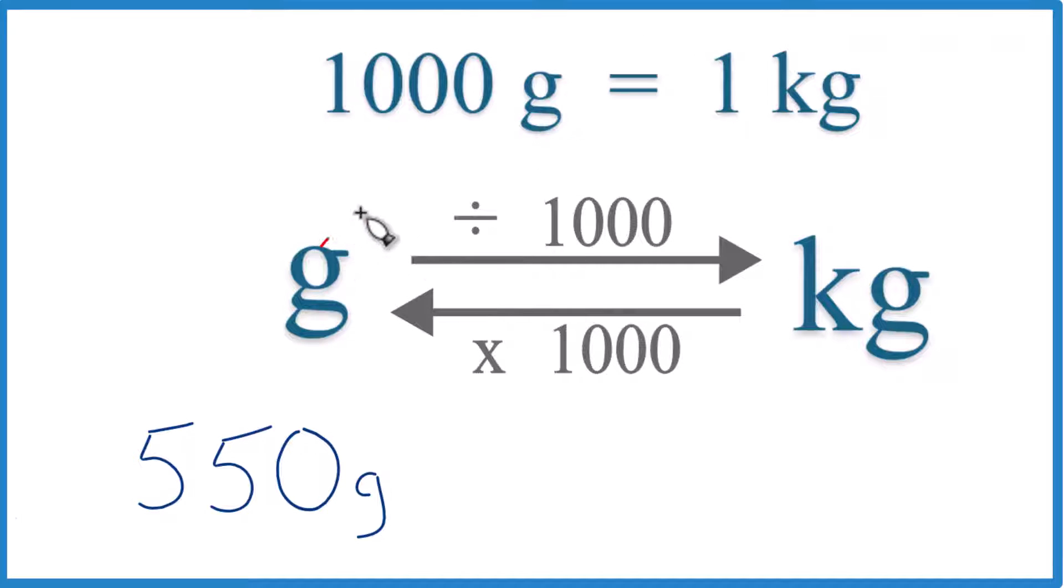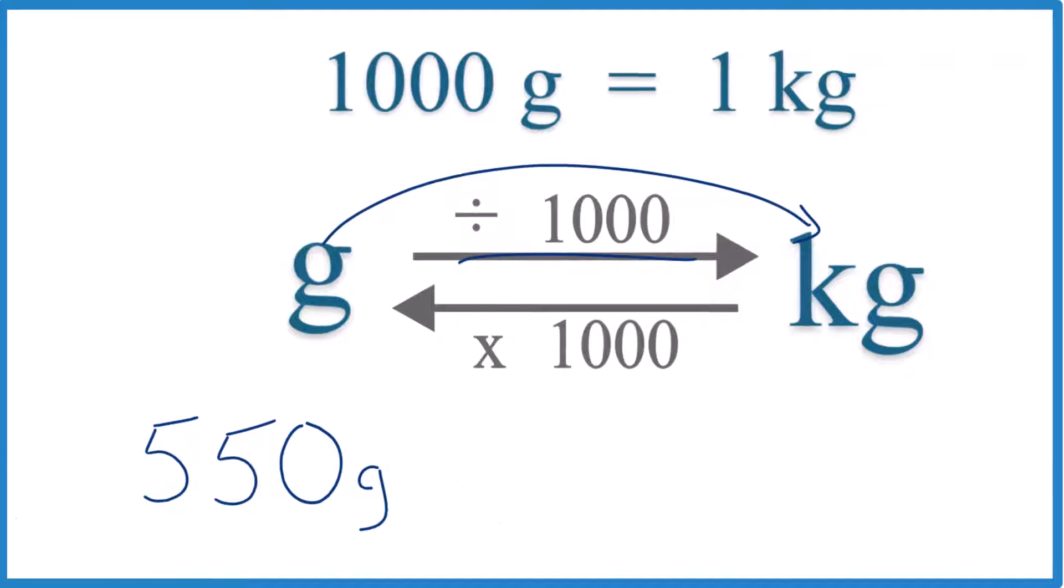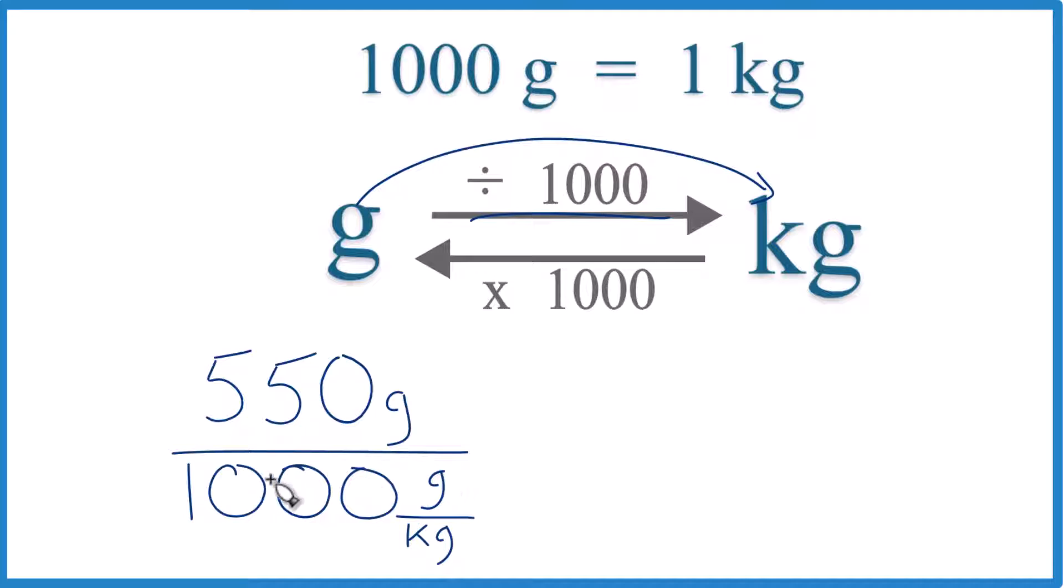If we have grams and we're going to kilograms, we're going to divide by 1,000, like this. Note we have 1,000 grams per kilogram. Now we have grams on top, the bottom, they cancel out, we'll be left with kilograms, and that's what we're looking for.